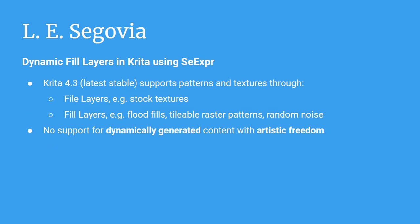As of the latest stable version of Krita 4.3, it supports patterns and textures through two types of layers. The first is called a file layer, which lets you embed static textures on the canvas. The second is called a fill layer, and it can be used for flat fills like tiled raster patterns and random noise. Neither of them lets users create dynamically generated content in an artistically free way.